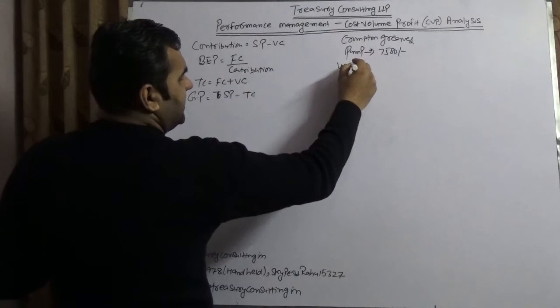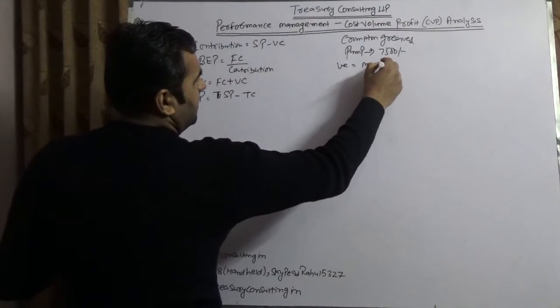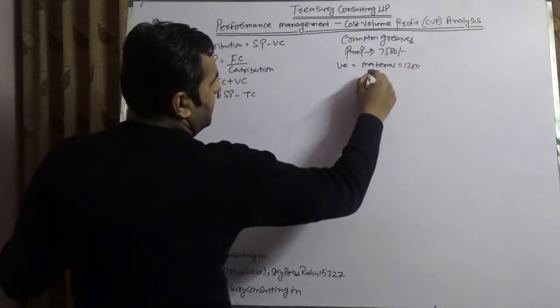Assuming the variable cost is material $1,200, labor